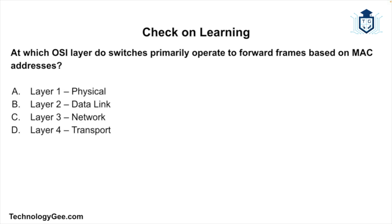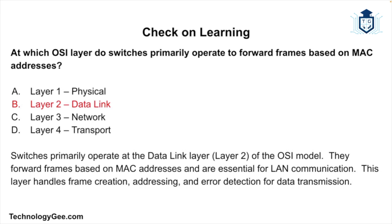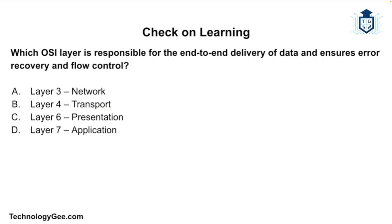Question 2: At which OSI layer do switches primarily operate to forward frames based on MAC addresses — Layer 1, Layer 2, Layer 3, or Layer 4? The correct answer is Layer 2, the Data Link layer. Switches primarily operate at the Data Link layer, forwarding frames based on MAC addresses, and are essential for LAN communication. This layer handles frame creation, addressing, and error detection for data transmission.